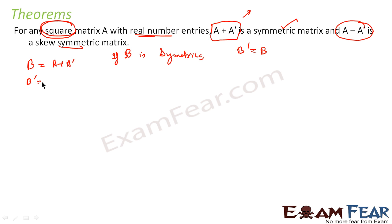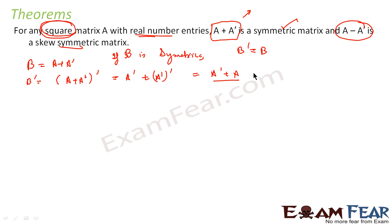So let's take the transpose of B, which is nothing but (A plus A dash) transpose. This is nothing but A dash plus A dash dash, which is A dash plus A. And this is nothing but equal to A plus A dash, which equals B. So I have proved B dash equals B. Since B dash equals B, that means it is a symmetric matrix — first part done.